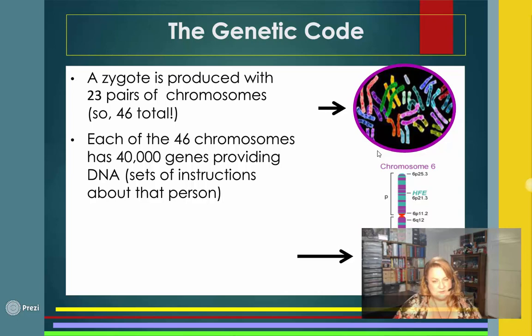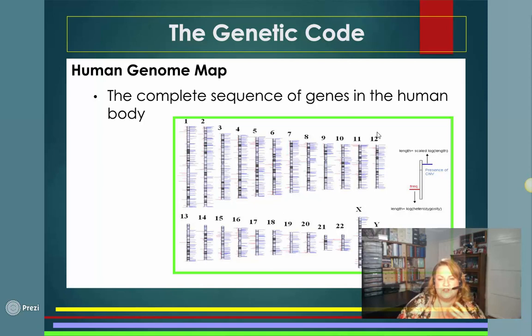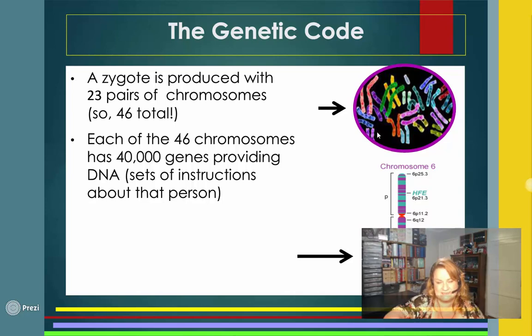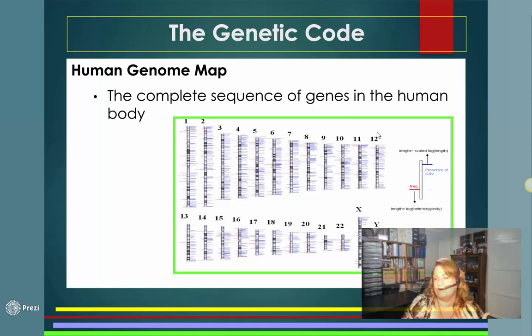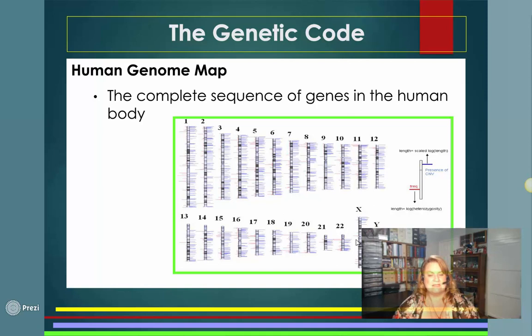If you took every single one of these chromosomes and laid them all out, you'd get the full genetic code — the human genome map. Every single person on this planet has a genome map that looks like this, with 23 pairs. This last pair is the one that determines our gender, our sex. It's really interesting because people can map all these things out — if you've done 23andMe or Ancestry.com, even your doctor might do something like this.